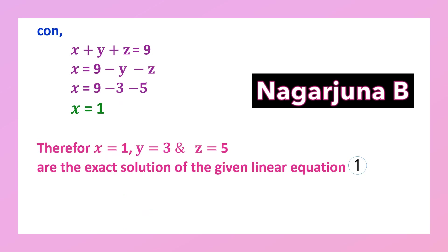Consider the first equation: x plus y plus z = 9. We have y = 3 and z = 5. Taking y and z to the right hand side: x = 9 minus y minus z = 9 minus 3 minus 5 = 9 minus 8 = 1. Therefore x = 1. The solution is x = 1, y = 3, z = 5.